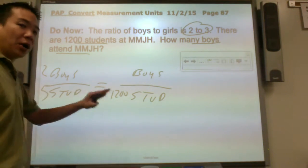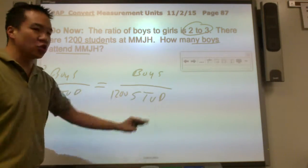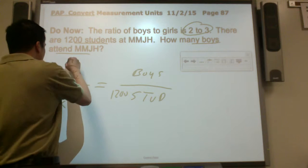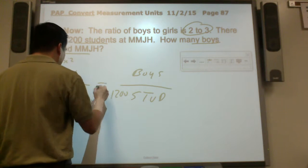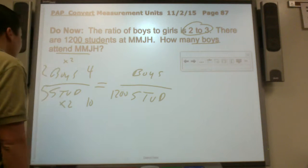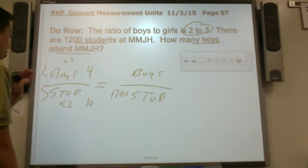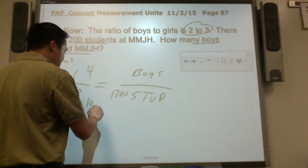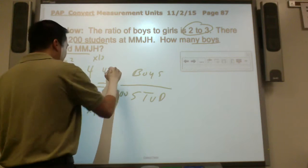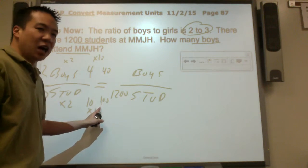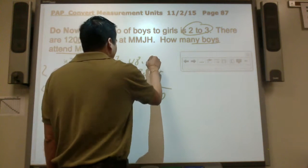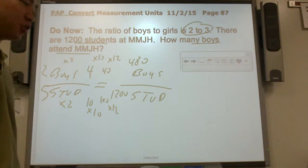How do I scale up from 5 students to 1,200 students? I'm going to do a slow scale up. I'm going to build it up by 2, so I get 10 students to 4 boys. Then build it up by 10 again, and that would be 100 and this will be 40. How many hundreds to get to 1,200? Then I'm going to build it up again by 12, and I get 480 boys out of 1,200 students.